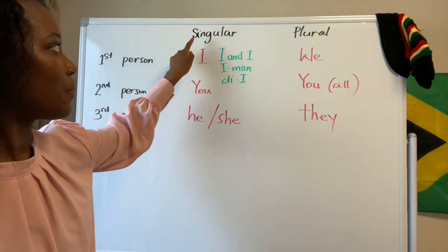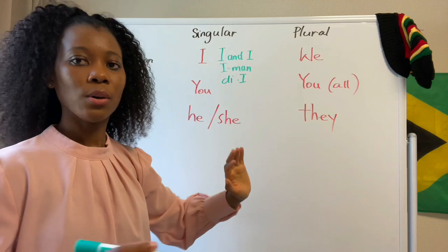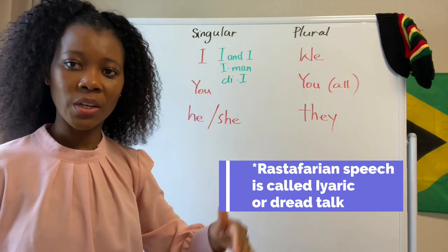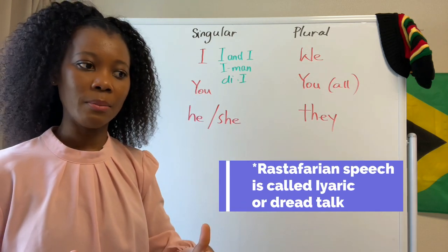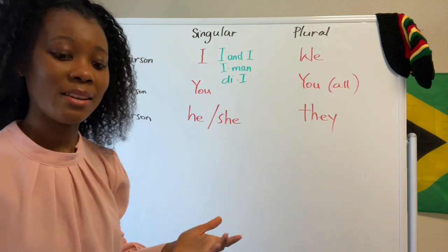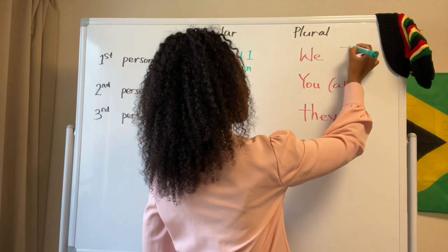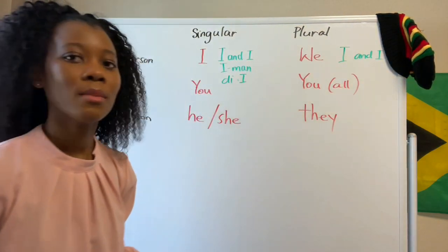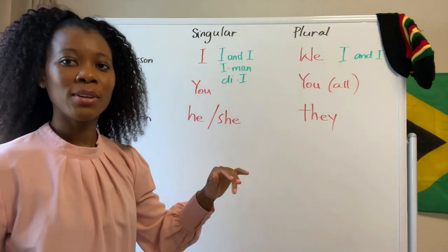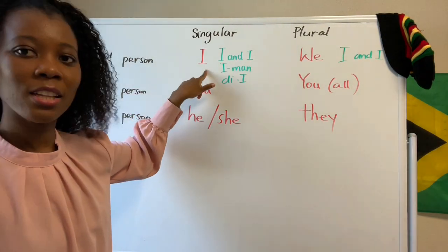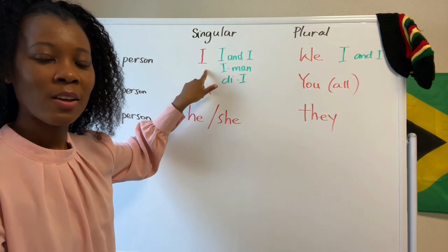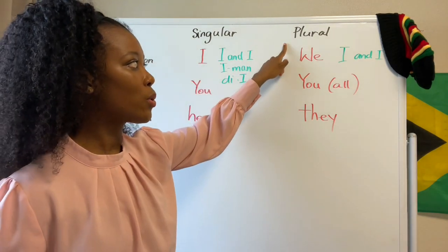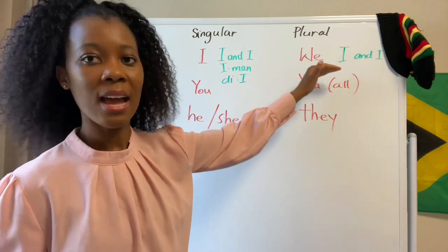Next, we're going to look at the plural. So in English we have 'we.' In Iyaric or Rastafarian speech, they would say 'I and I.' So first person singular in English is 'I,' and in Iyaric it's 'I and I,' 'Iman,' or 'The I.' Then the plural 'we' in English becomes 'I and I' in Iyaric.